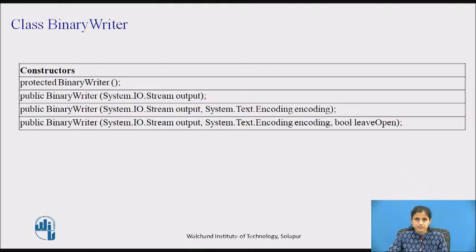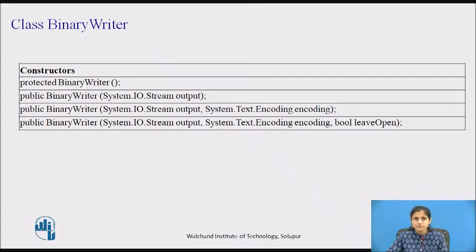Now we'll see the BinaryWriter class. BinaryWriter writes primitive data types in binary to a stream and supports writing strings in a specific encoding. It provides methods that simplify writing primitive data types to a stream. For example, we can use the Write method to write a boolean value to the stream as a 1-byte value. When creating a new instance, we provide the output stream and optionally specify encoding and whether to leave the stream open after disposing the BinaryWriter object.